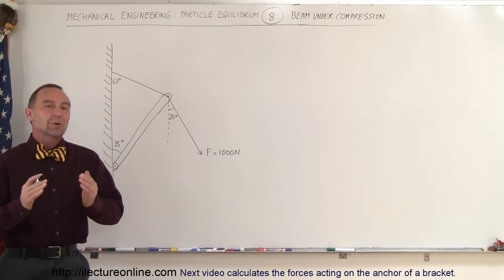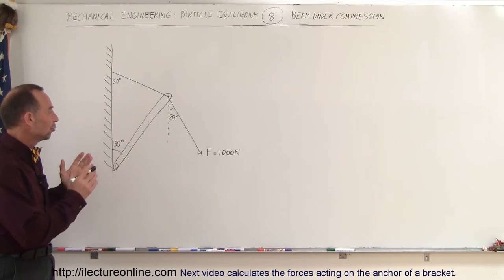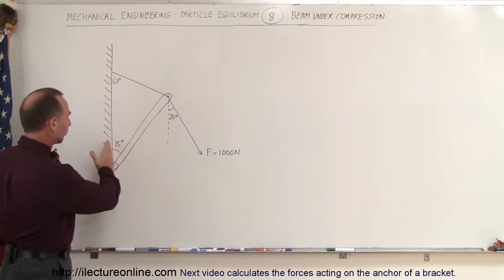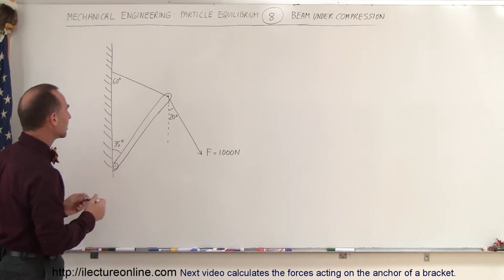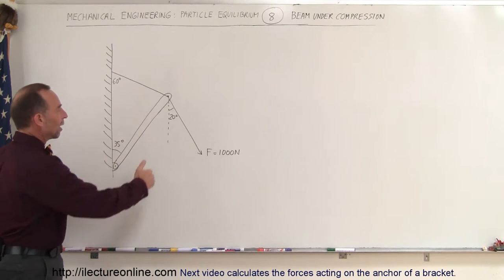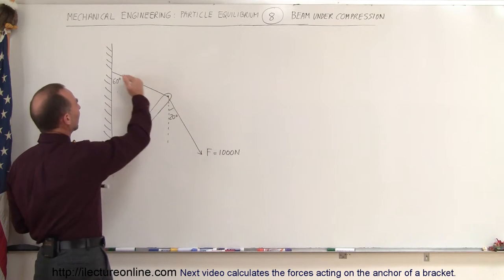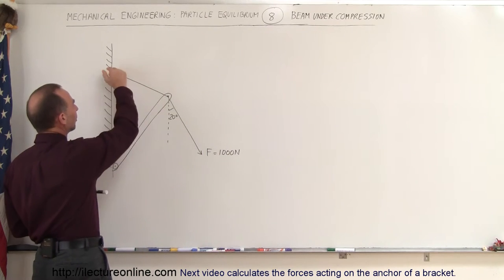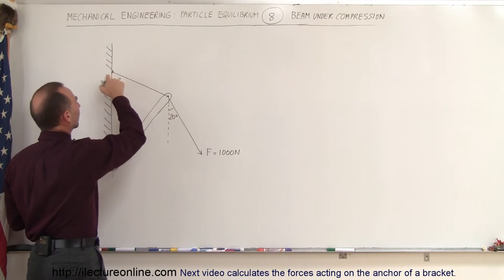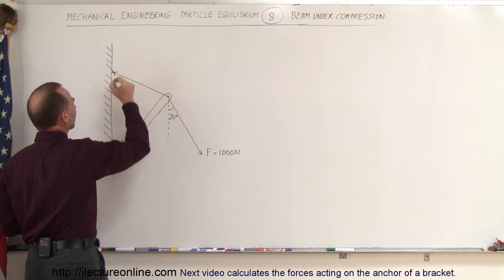Welcome to Electronline. Here we're going to talk about a beam under compression. We have two forces acting on the beam. The beam is angled at 35 degrees away from the wall, and it's hinged so that it can move back and forward. We have a force of a thousand Newtons pulling on the end of the beam, and then we have a cable holding up against the wall, with a hook right there so we have a force acting in this direction.